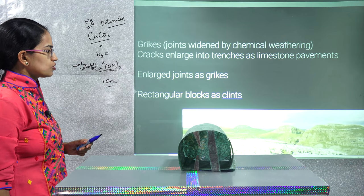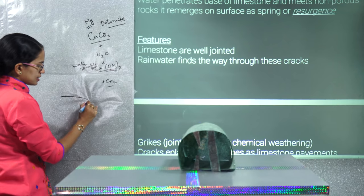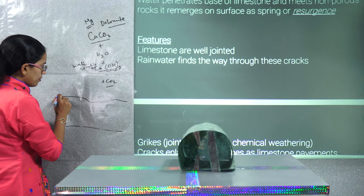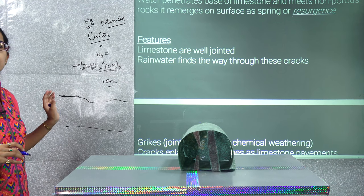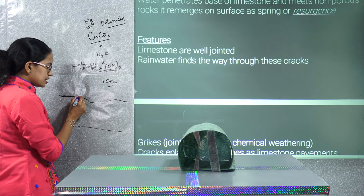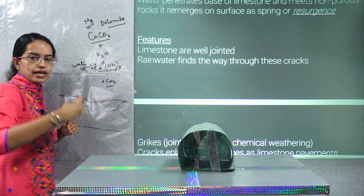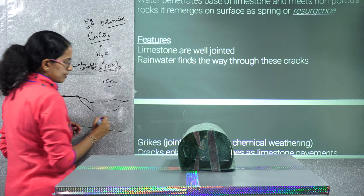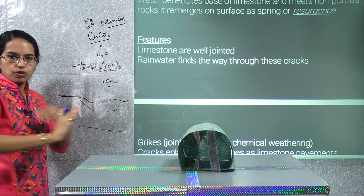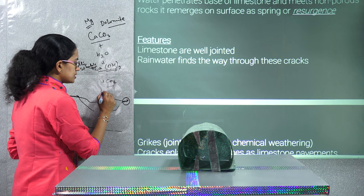In a limestone topography, a stream running over the landmass suddenly disappears underground. After miles and miles, it re-emerges back to the surface. This stream, which was previously visible on the surface, disappears and then reappears.